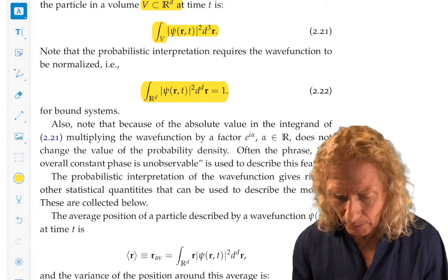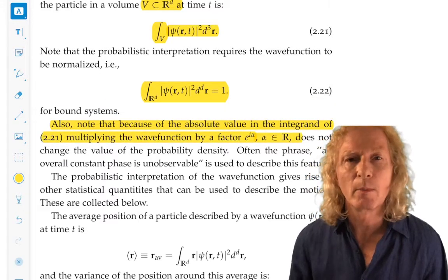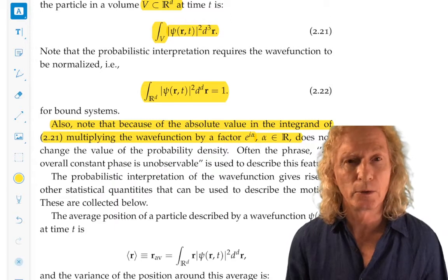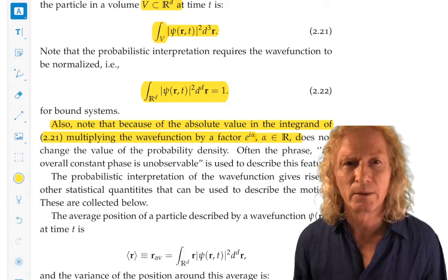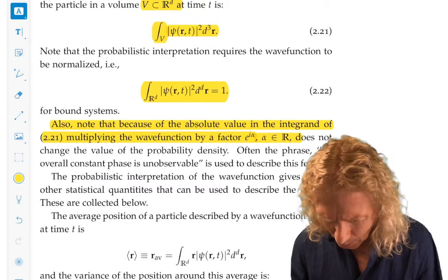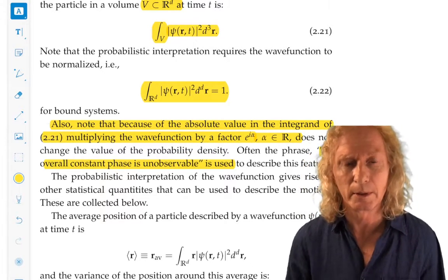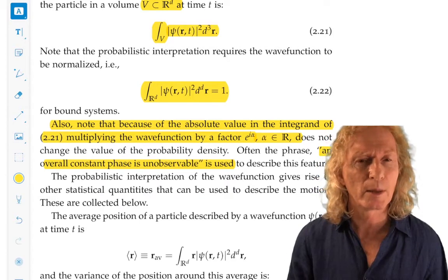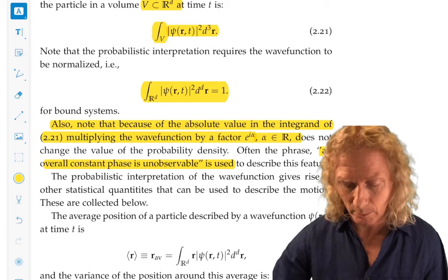One of the things we see is that if we multiply any wave function by a factor e to the i alpha, by a complex number of magnitude one, it doesn't change the probability density. In that sense, the phrase we often use is an overall constant phase is unobservable, in the sense that it does not affect the probability density. I had a comment related to that in the previous chapter when we talked about state vector.